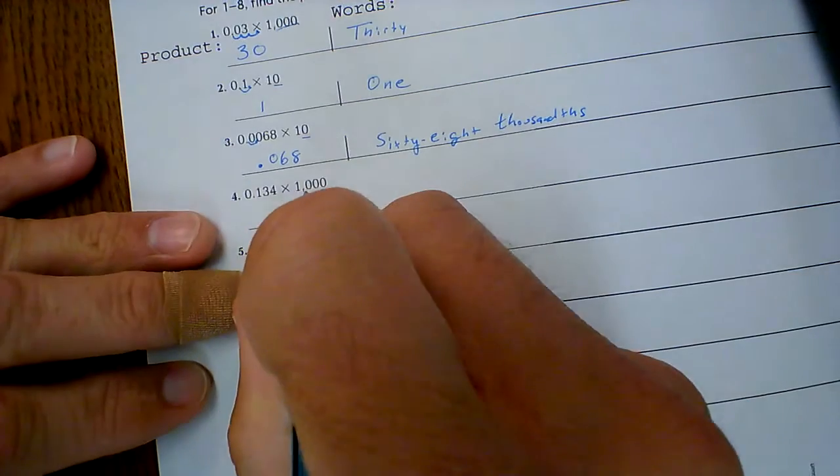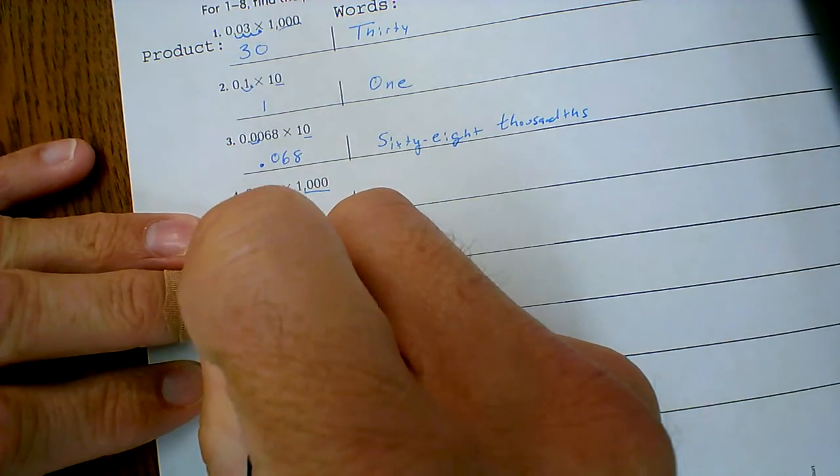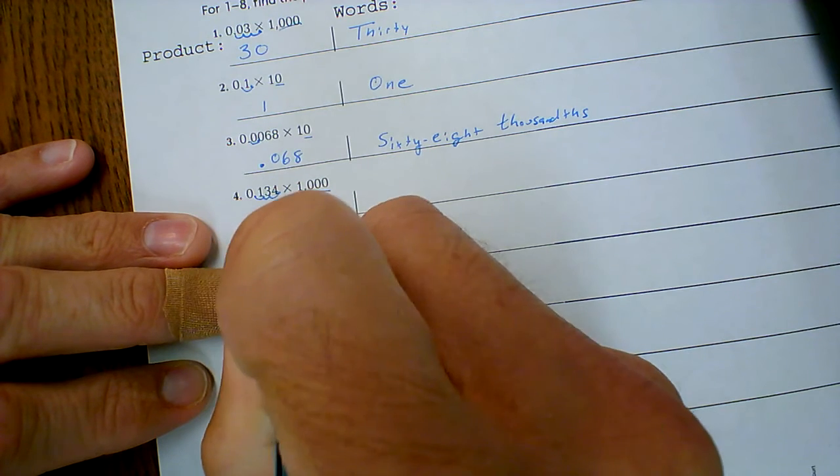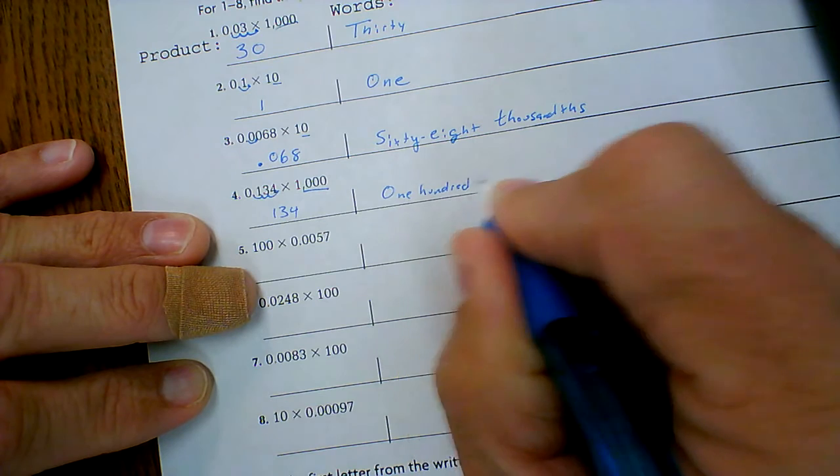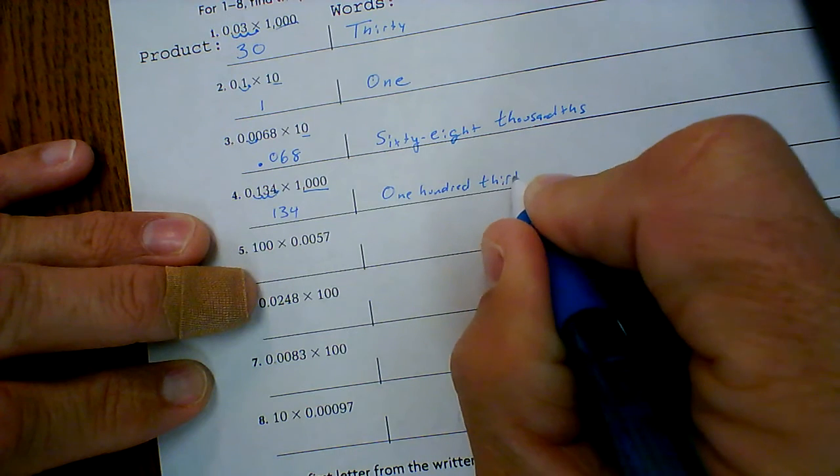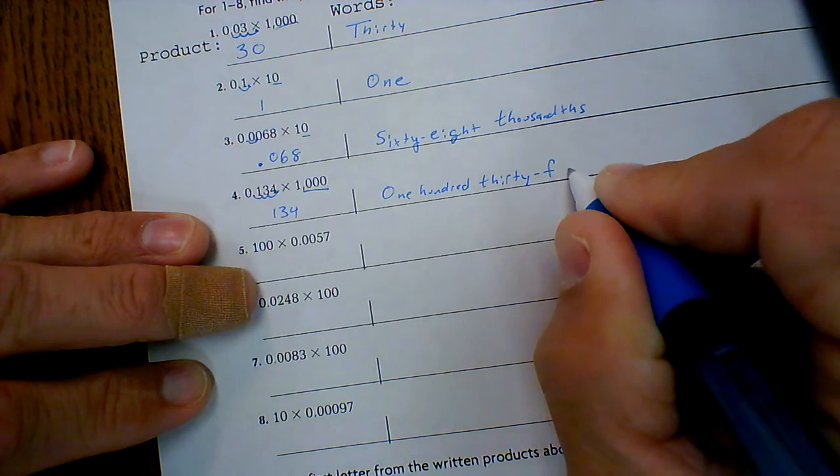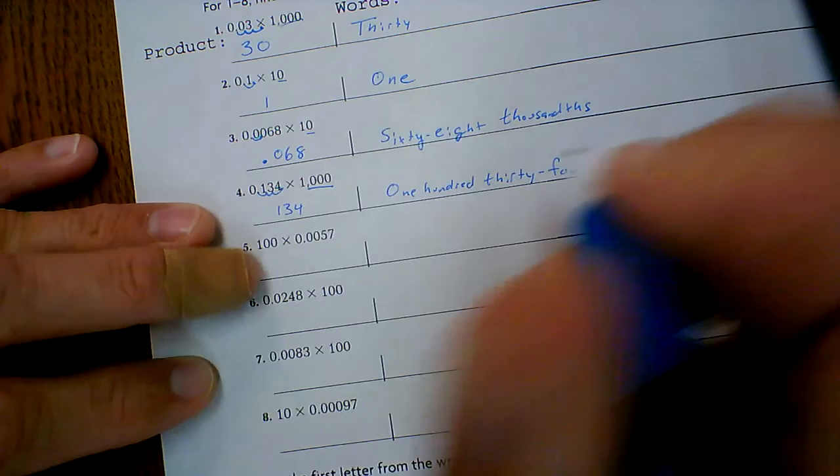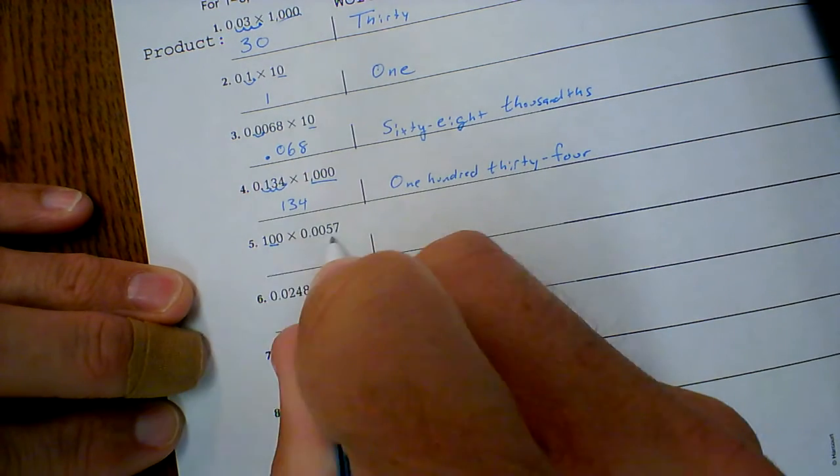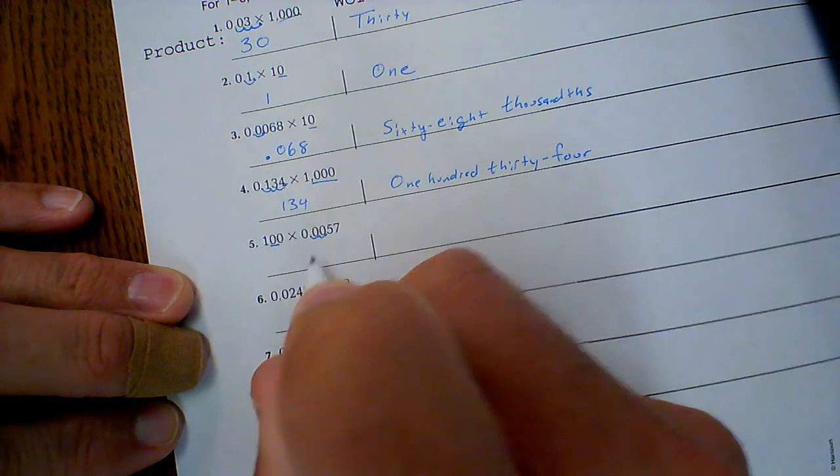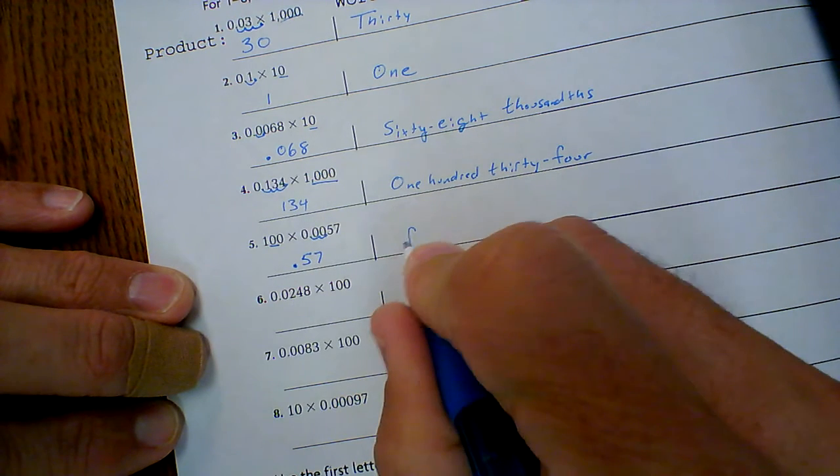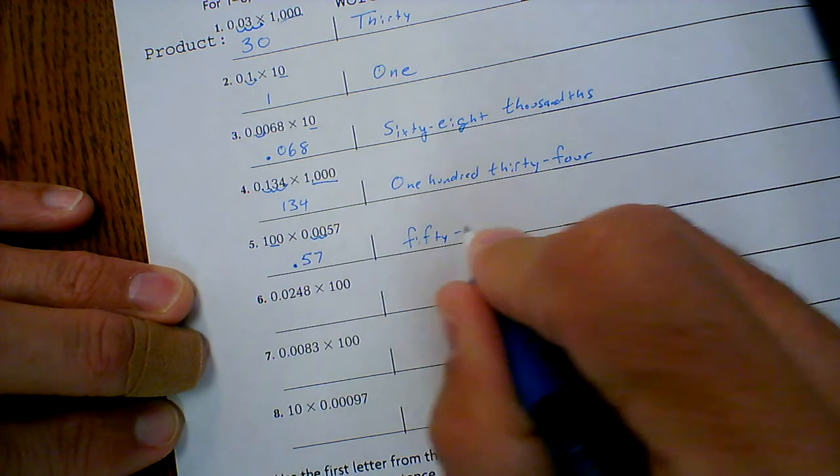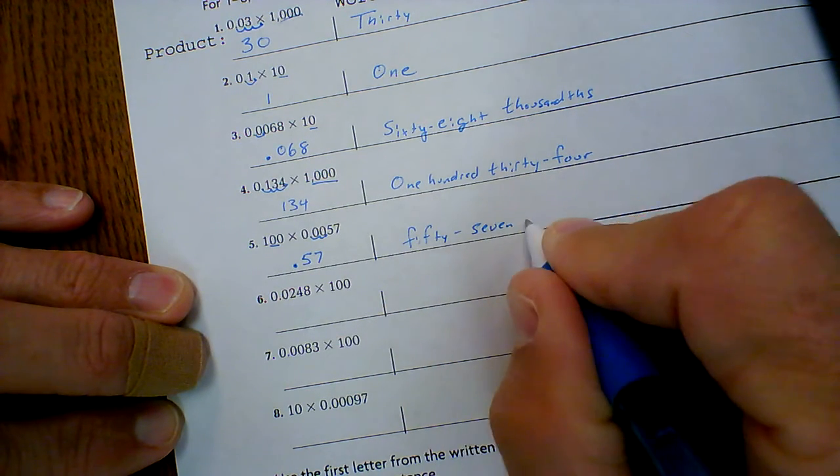Thousandths. Three zeros: one, two, three. One hundred thirty-four. Remember those hyphens for the two-word numbers. Two zeros: one, two. So I have fifty-seven hundredths.